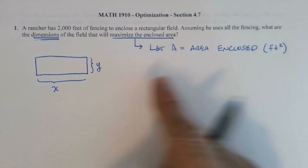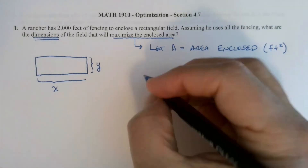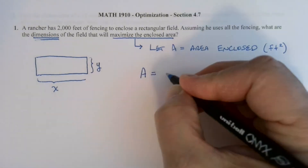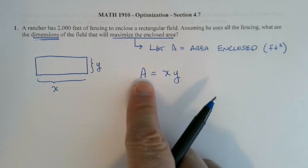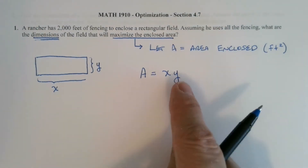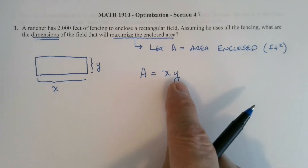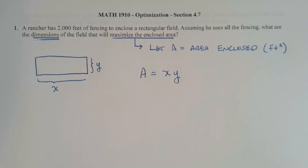We need an equation relating these variables. The area of any rectangle is length times width, so A = x · y. However, this is a function of two variables. We need it to be a function of one variable since we're dealing with single-variable calculus — a function of x to find the maximum.